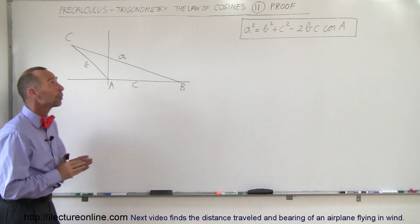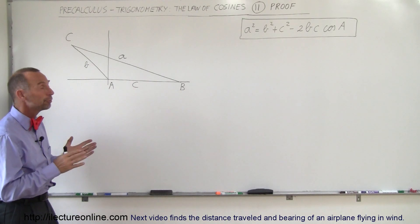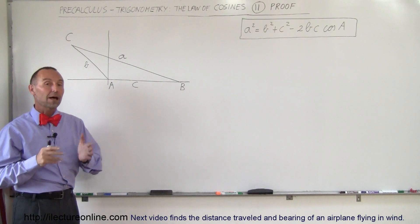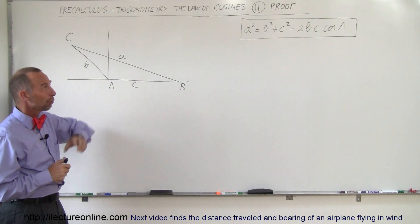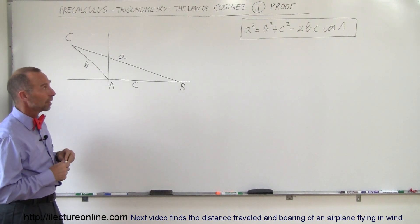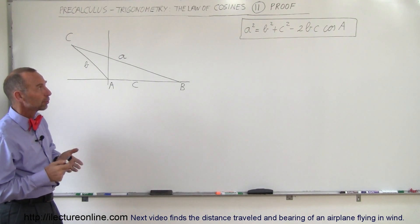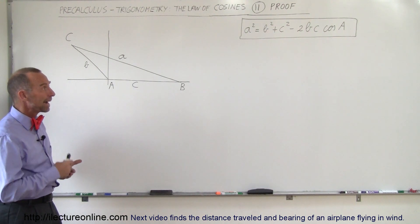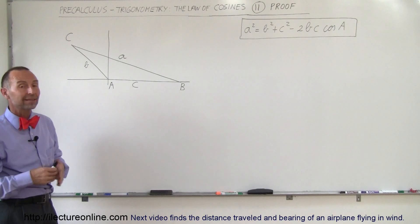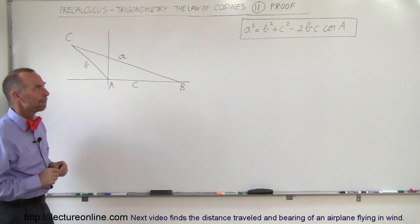Welcome to our lecture online. Now we're going to prove the law of cosines. We have one of the forms of the law of cosines: a squared equals b squared plus c squared minus 2bc times the cosine of A.